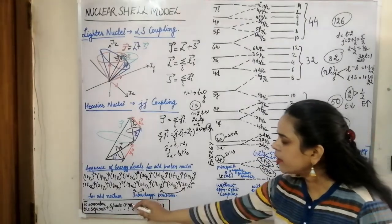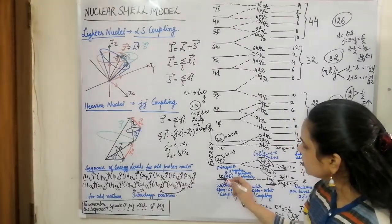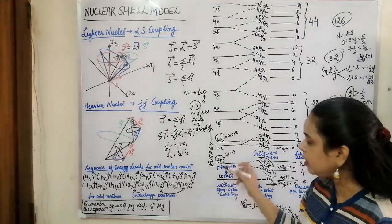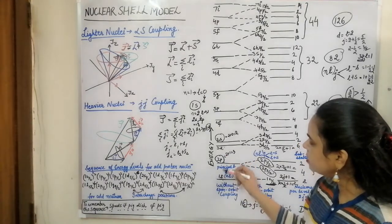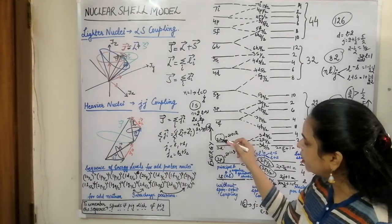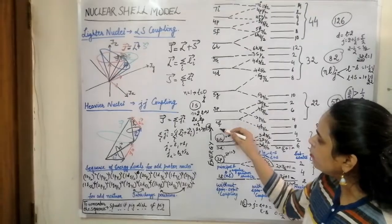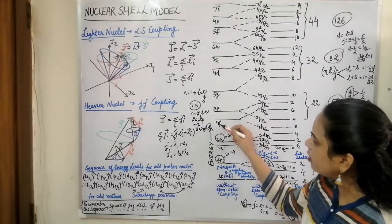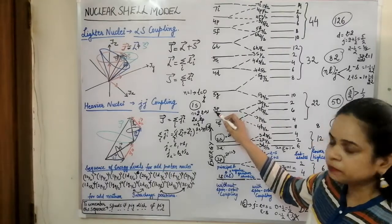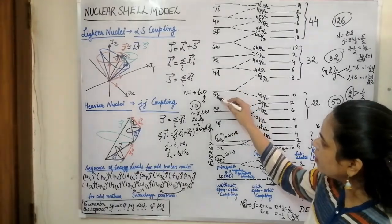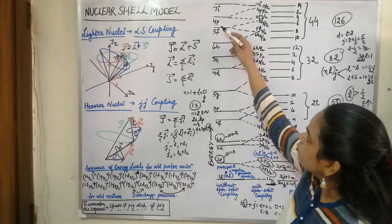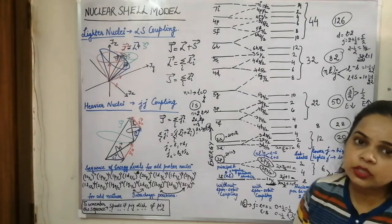Applying the mnemonic 'spuds if pig dish of pig': S gives 1s, P gives 2p (p first appears at level 2), U is omitted, D gives 3d (d first appears at level 3), S repeated gives 2s. Then 'if': I is omitted, F gives 4f (f at level 4). P repeated gives 3p. G from 'pig' gives 5g (omit vowel i). Then 'dish': D repeated gives 4d, S repeated gives 3s. Then 'of pig': H gives 6h, F gives 5f, P gives 4p, I kept for last pig gives 7i.